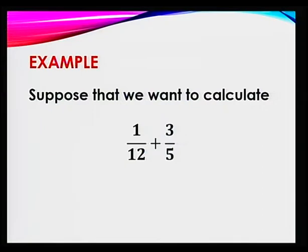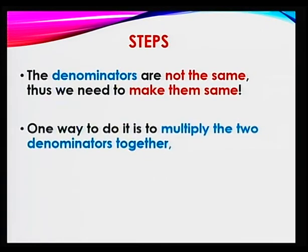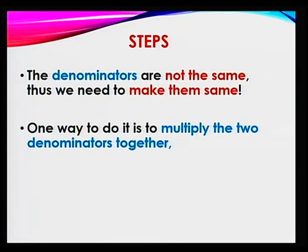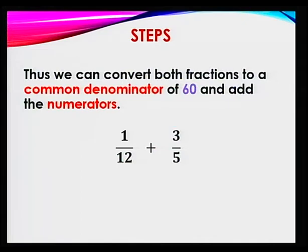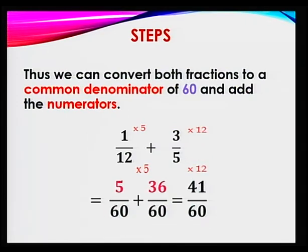Now suppose you want to calculate 1 over 12 plus 3 fifths. Check the denominators — they are not the same, so we make them the same. One way is to use the LCM, or simply multiply the two denominators together: 12 times 5 is 60. Convert both fractions to a common denominator of 60. 12 times 5 gives 60, so multiply the numerator 1 by 5 to get 5 over 60. For 3 fifths, 5 times 12 is 60, so multiply 3 by 12 to get 36 over 60. That gives 5 over 60 plus 36 over 60, which is 41 over 60.